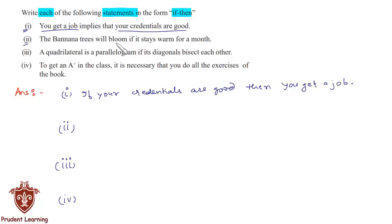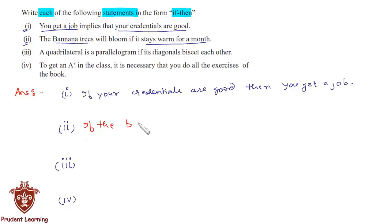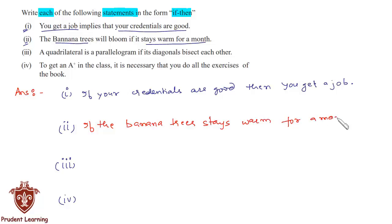The next statement is: 'The banana trees will bloom if it stays warm for a month.' We can rewrite the given sentence as: 'If it stays warm for a month, then the banana trees will bloom.'